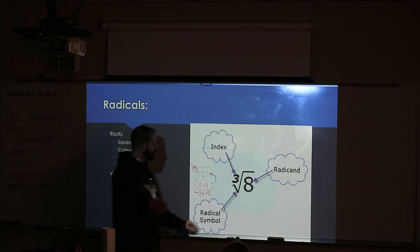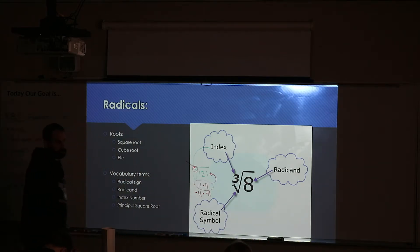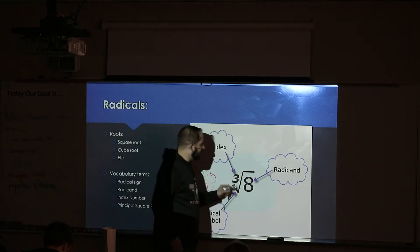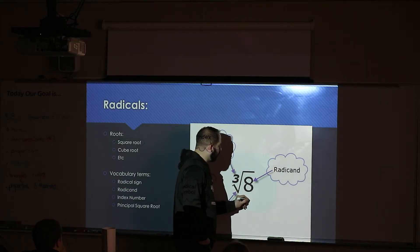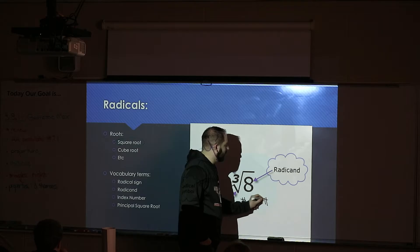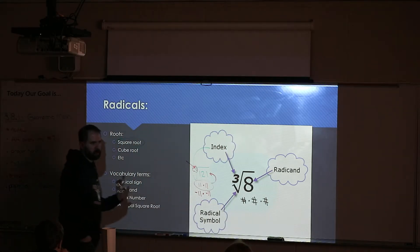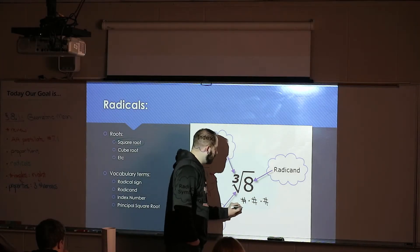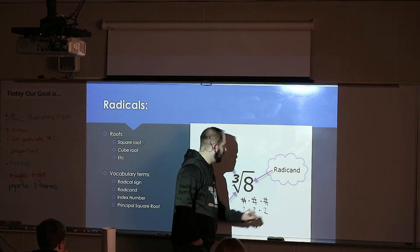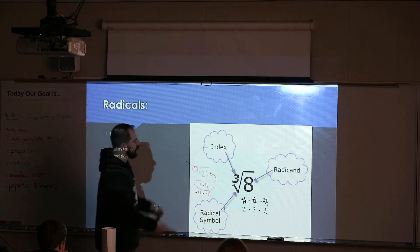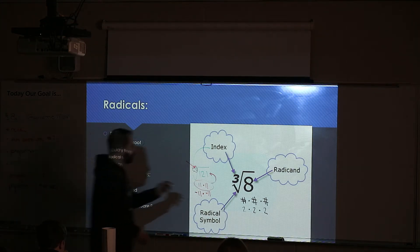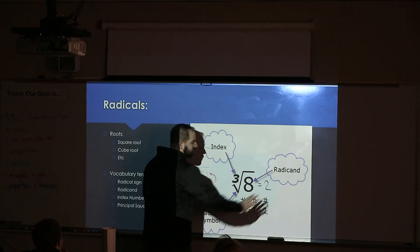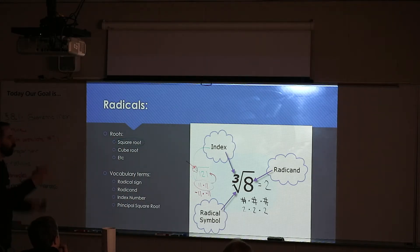For a cube root — index number 3 — there's only one answer, not two, because you're multiplying the number three times. For example, the cube root of 8: what number taken times itself three times gives 8? That's 2. Two times two times two equals eight. That's the answer — the cube root of 8 is 2.